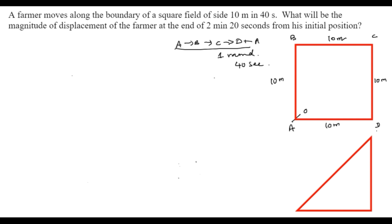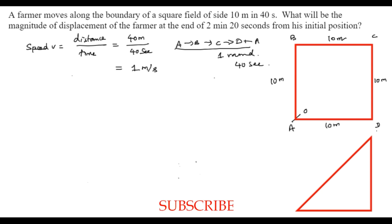The total distance for one round is 10 + 10 + 10 + 10 = 40 meters. To cover 40 meters he takes 40 seconds. So speed v = distance / time = 40 / 40 = 1 meter per second.